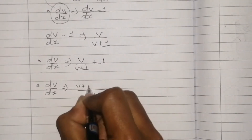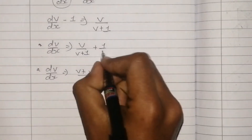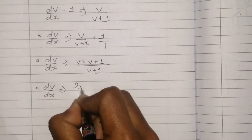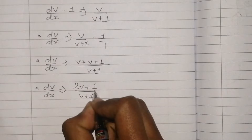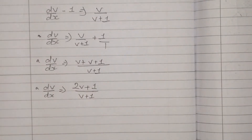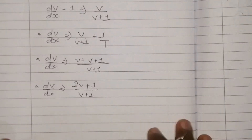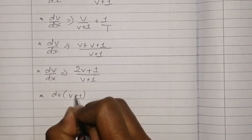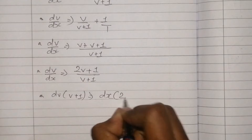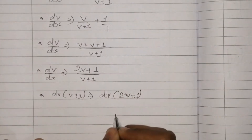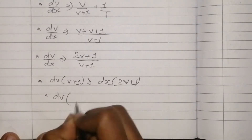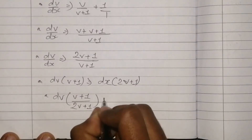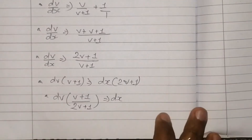Taking LCM of (v + 1), dv/dx is equal to (v + v + 1) upon (v + 1), which gives dv/dx is equal to (2v + 1) upon (v + 1). Cross multiplying, (v + 1) dv is equal to (2v + 1) dx.